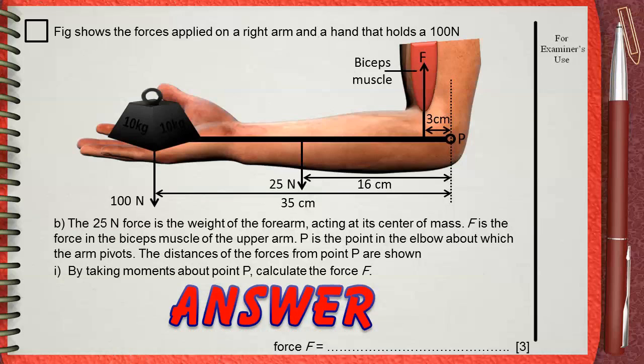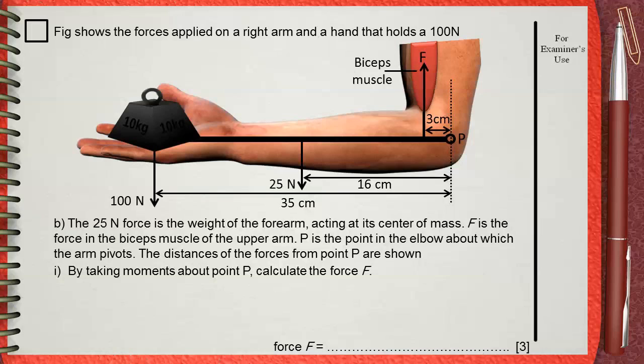The force F is calculated using the second condition of equilibrium. The total anticlockwise moment equals the total clockwise moment about our pivot, which is P.